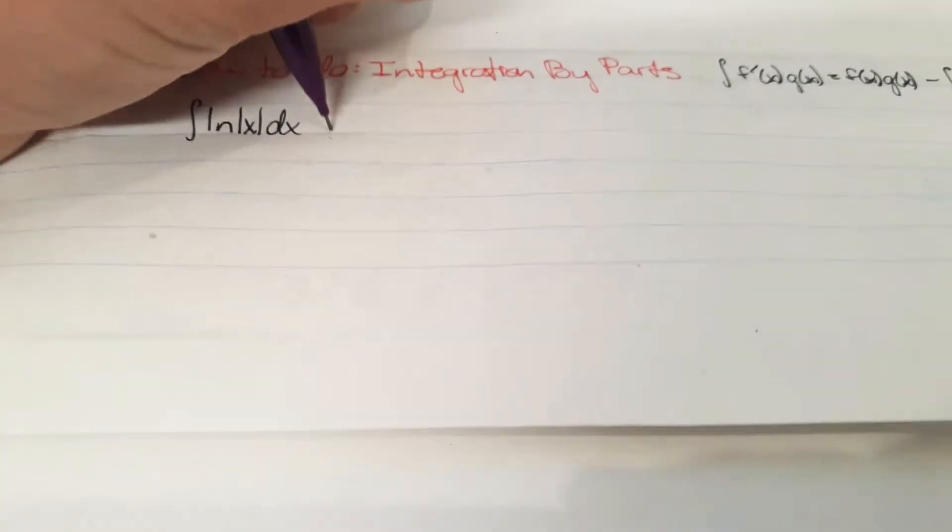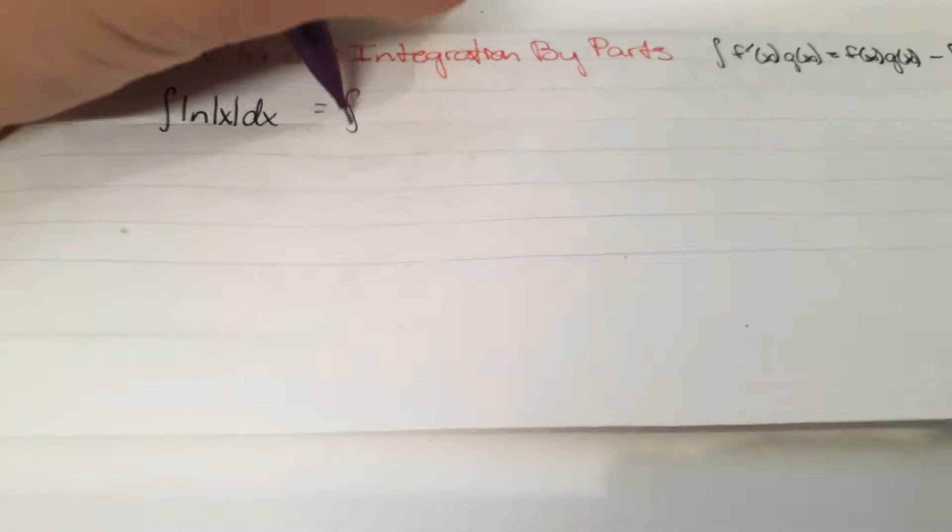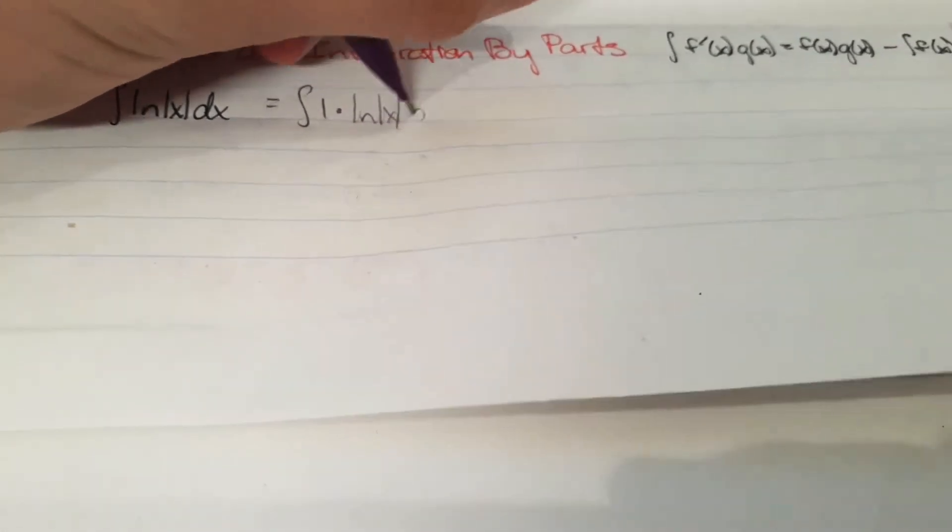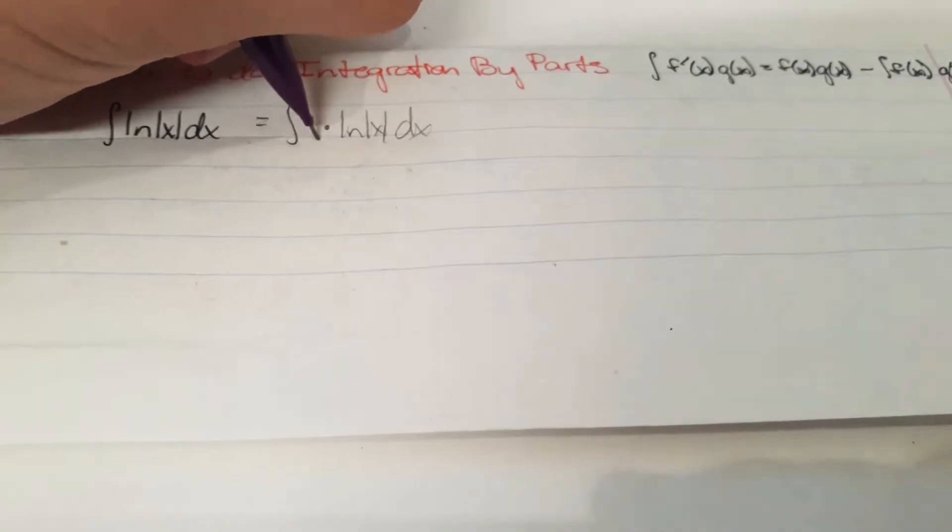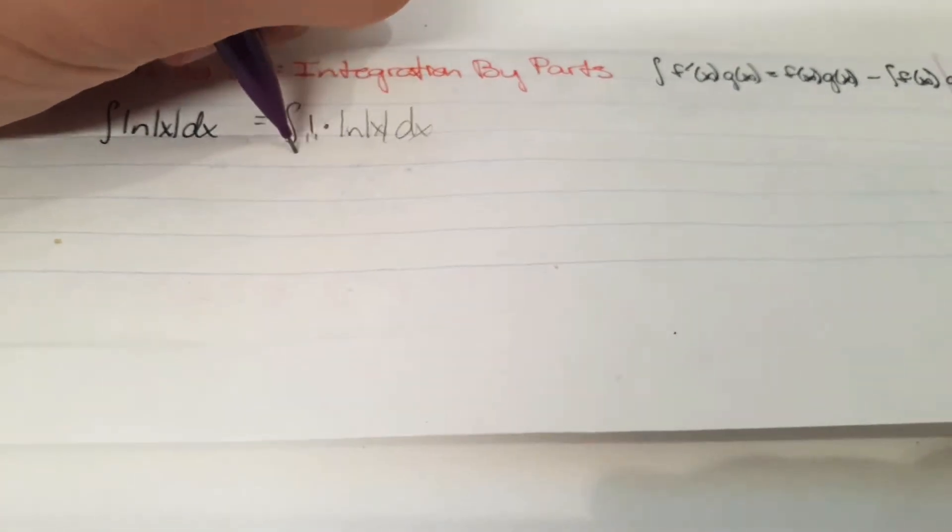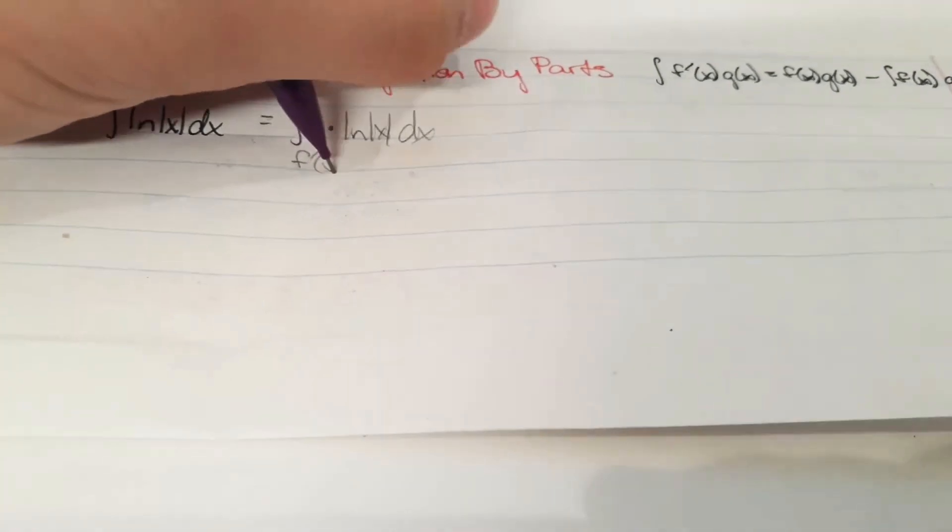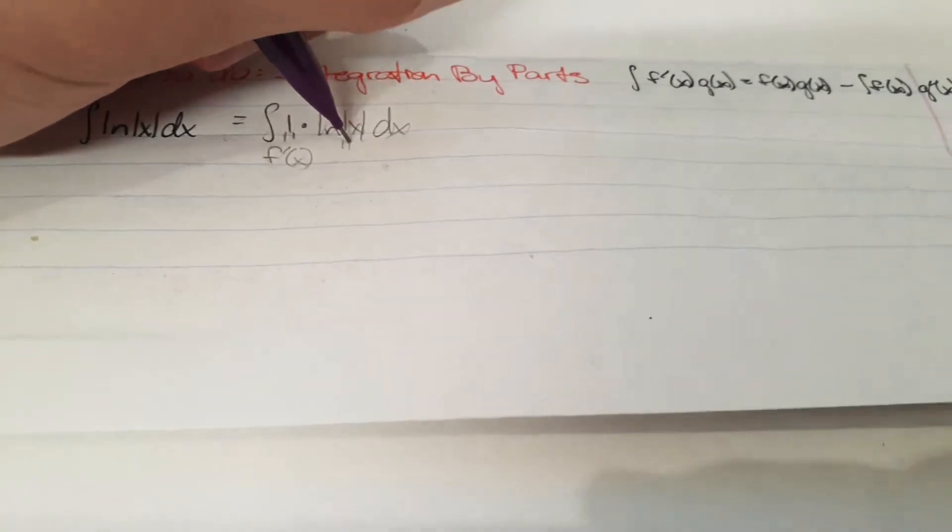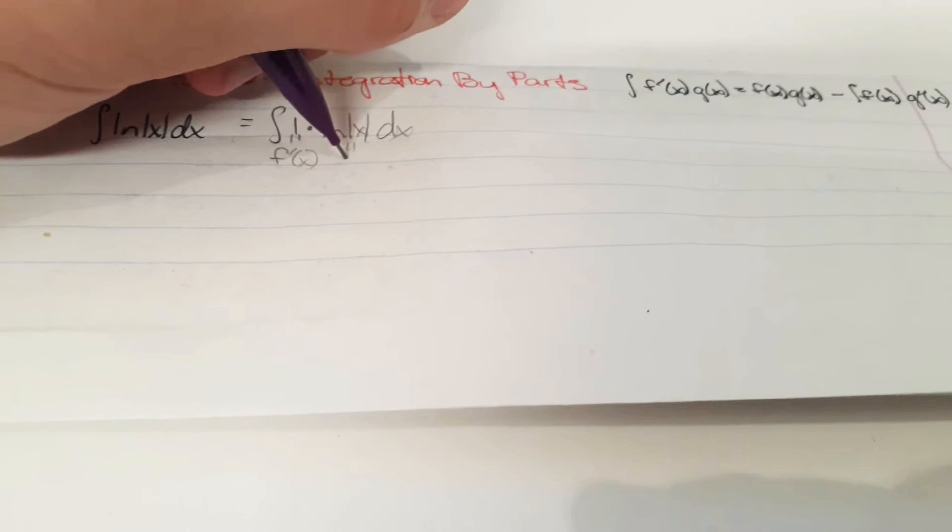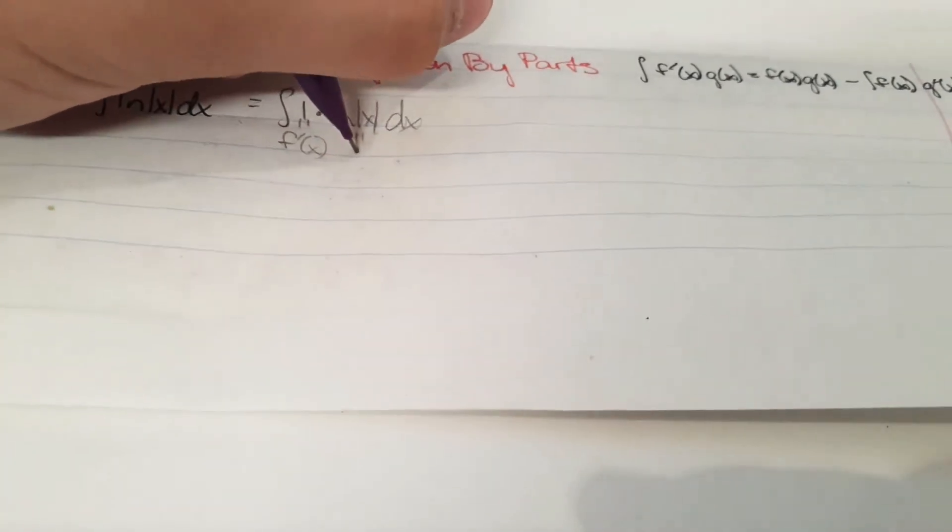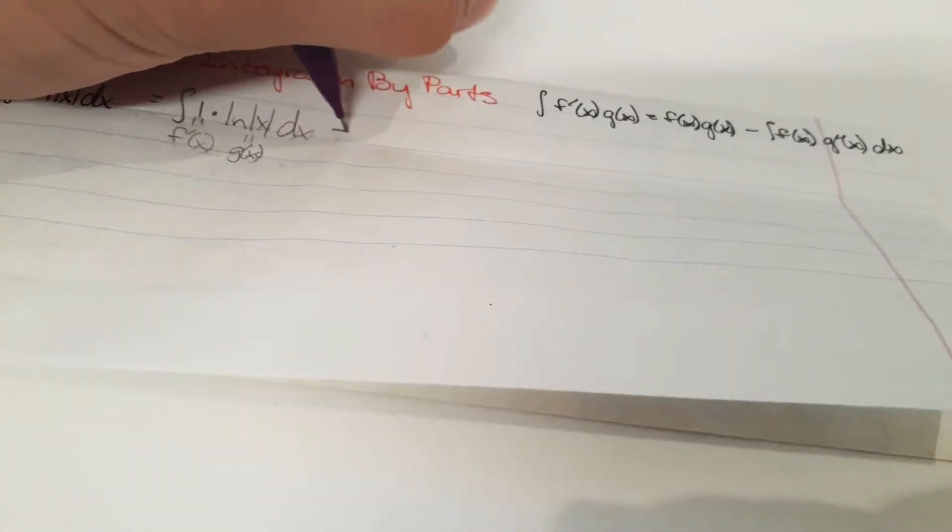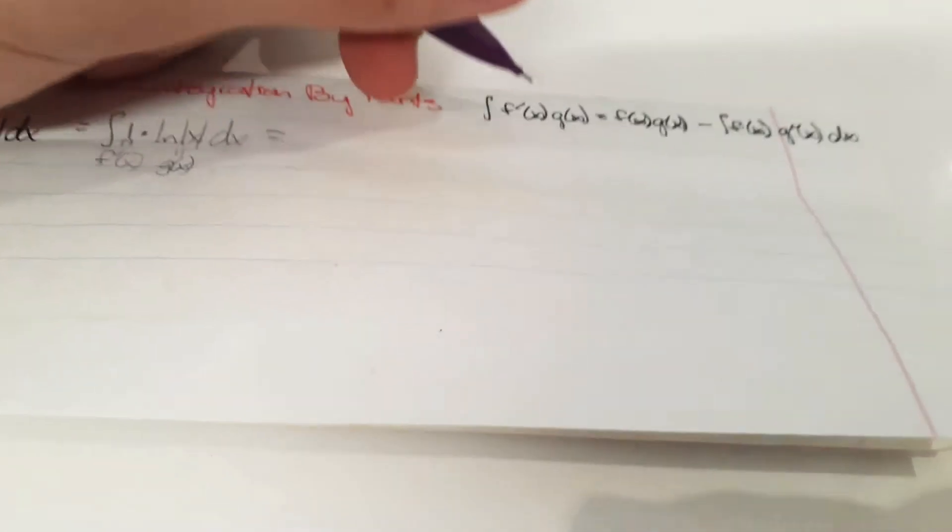Well, for that, I'd be saying, look at this sneaky little trick. It's actually one times the natural log of x dx. And now I can see that one is obviously f prime of x because its derivative is x. And the natural log of x, that's easy to take its derivative of. So I'm going to call this g of x. So now, we have it in this form over here.